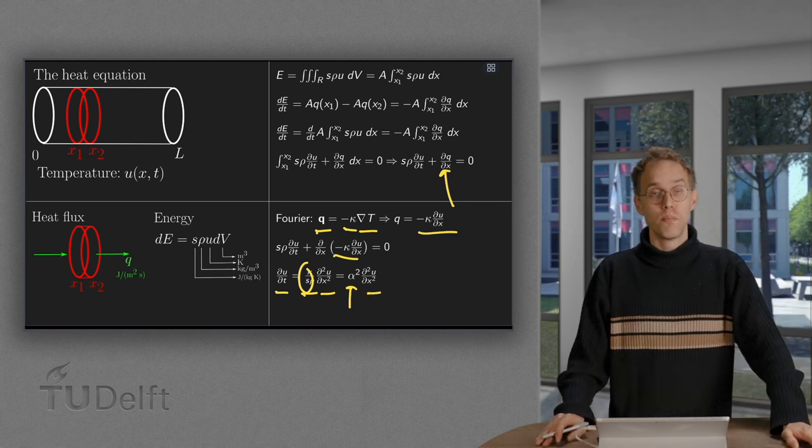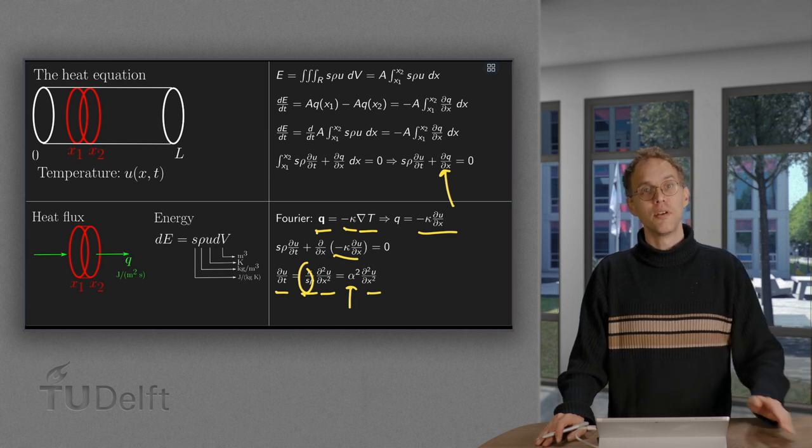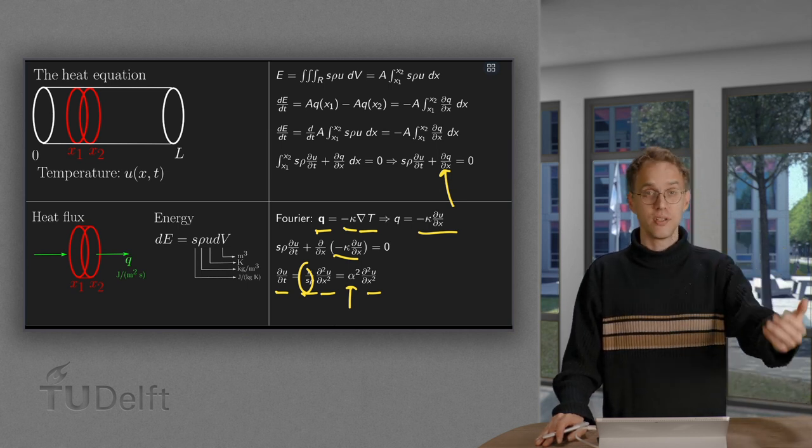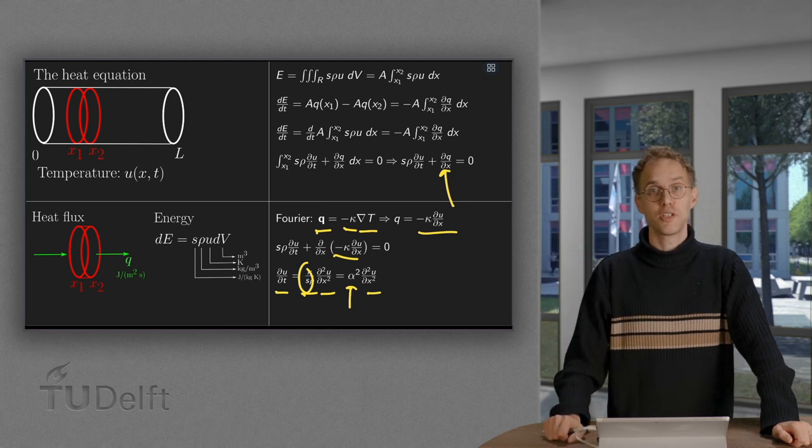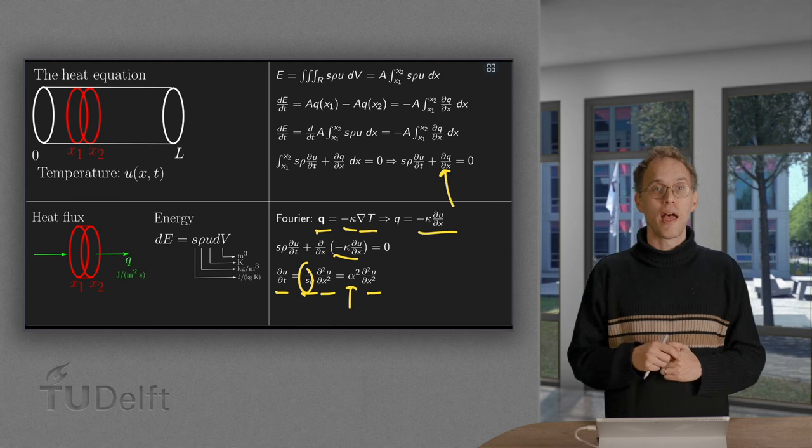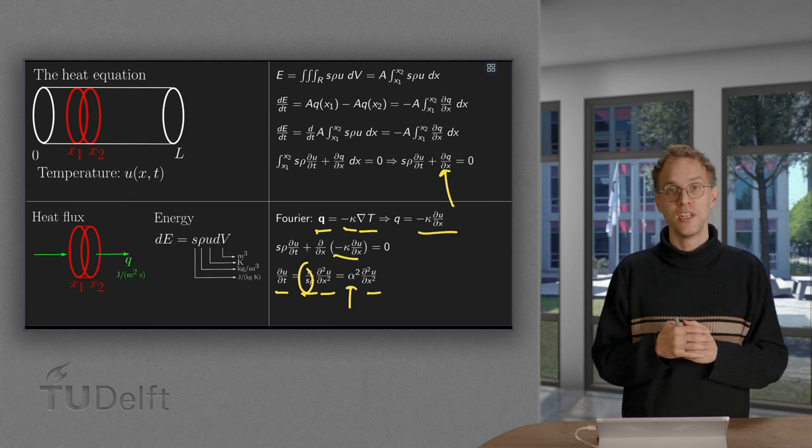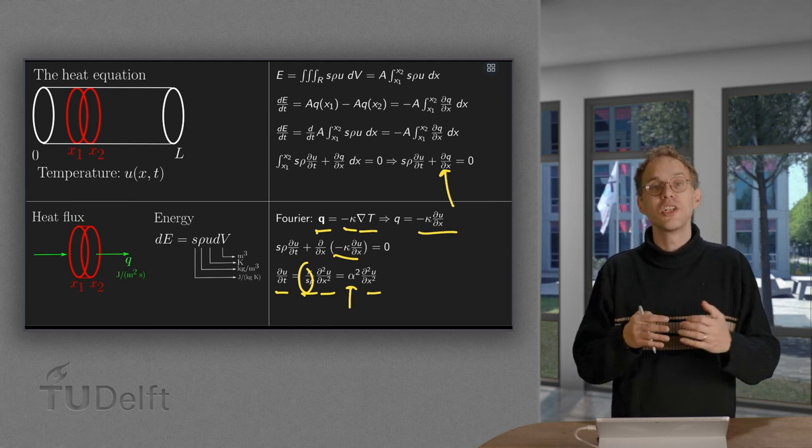And this is a partial differential equation because we have not only a differentiation with respect to T, but we also have a derivative with respect to another variable, with respect to X. So, here you see how a partial differential equation arises naturally from physical principles.